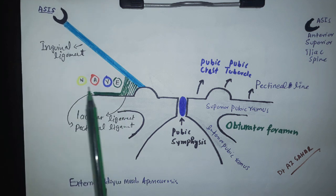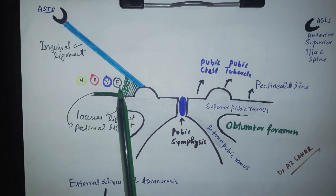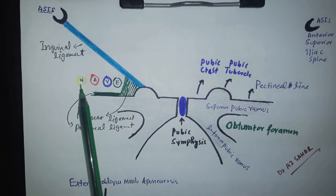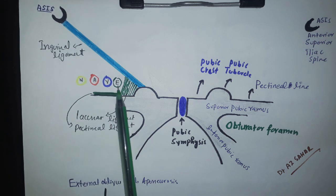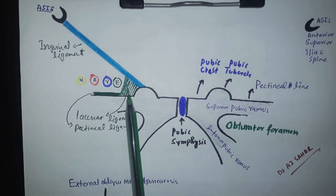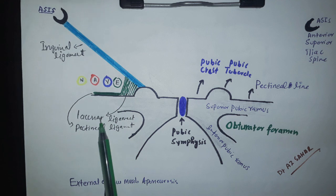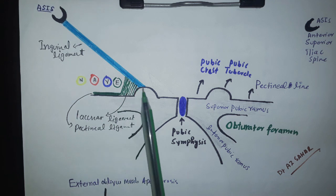Now, as we already remember the mnemonic NAVEL: nerve, artery, vein, empty space, and lacunar ligament. So this is the lacunar ligament, which is formed from the inguinal ligament.